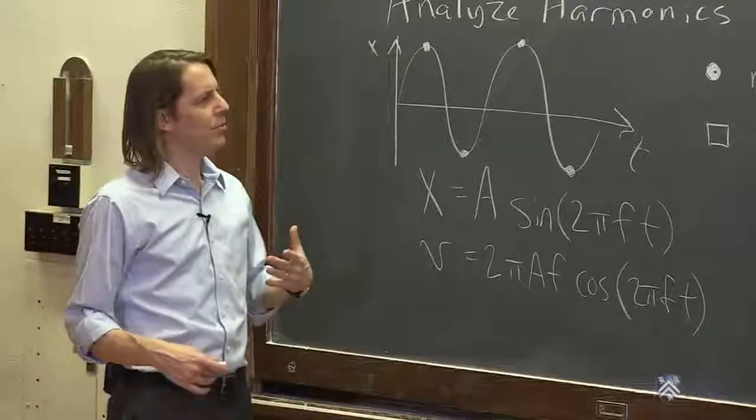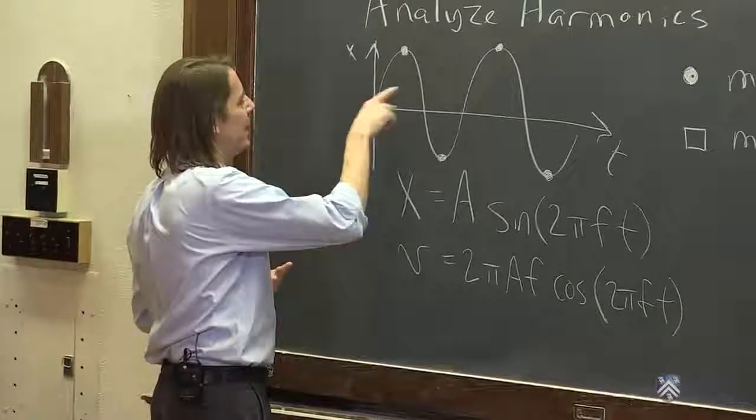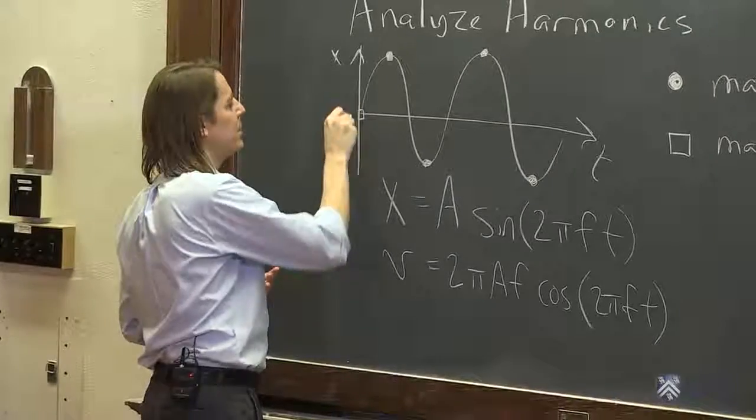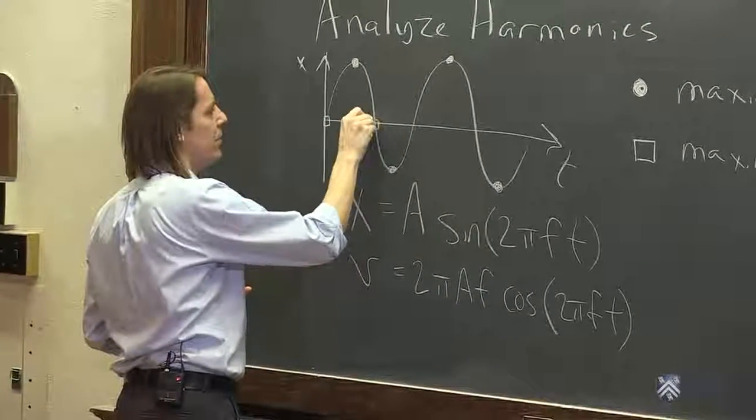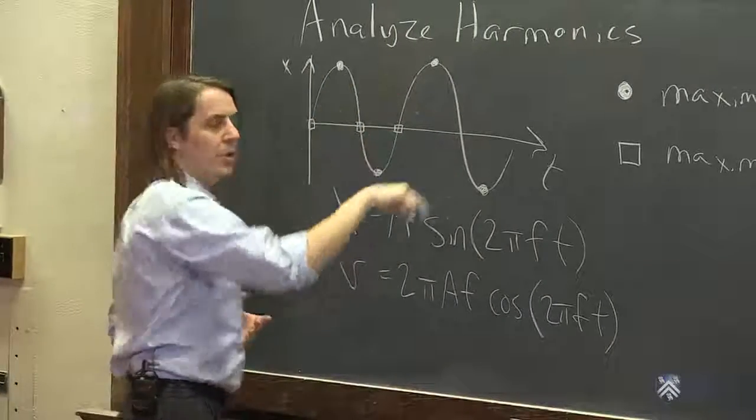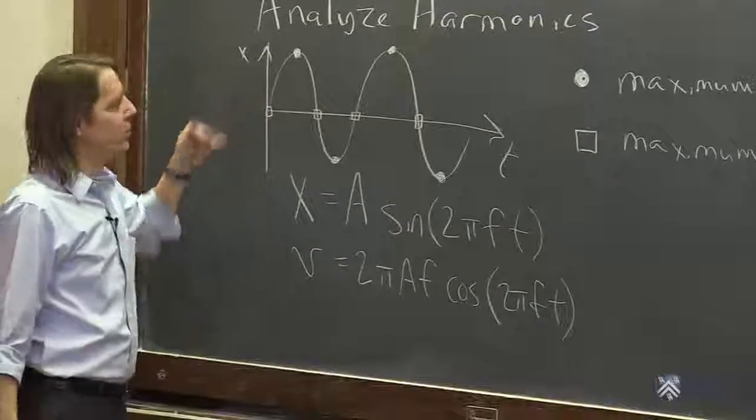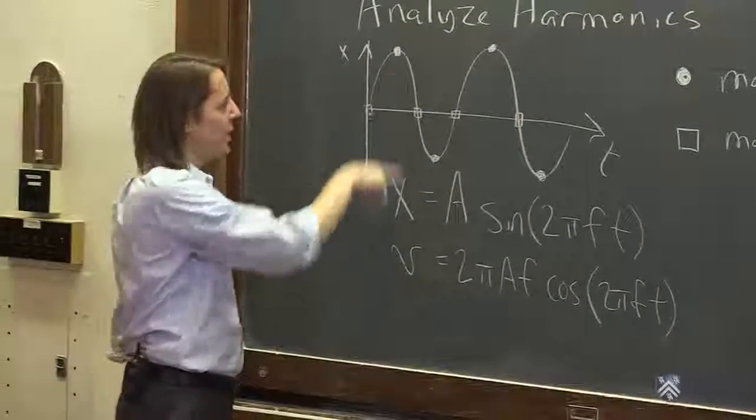Or you can think in terms of speed being the derivative or the slope of the position curve, and that would tell you the speed. Maximum speed occurs here, and it occurs here. And basically it occurs when it goes through the axis, when it goes through the middle. That's when the slope is maximum.